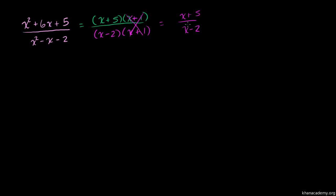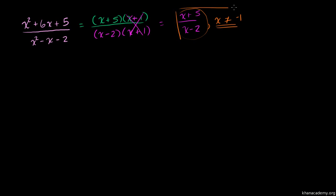For these to truly be equal, we have to add the condition that x cannot be equal to negative 1, because if x equals negative 1, the original expression is undefined. The simplified form (x + 5)/(x − 2) is defined at x = negative 1, but the original is not. So we must include that condition for the two expressions to be genuinely equal.